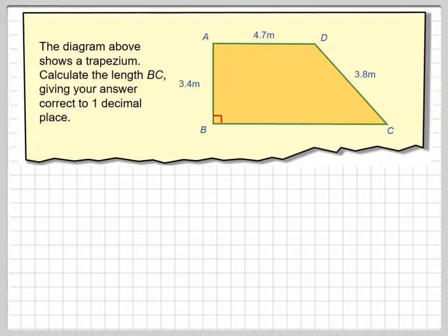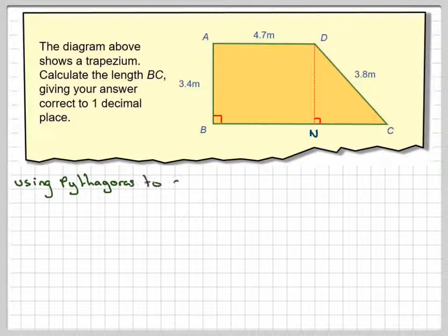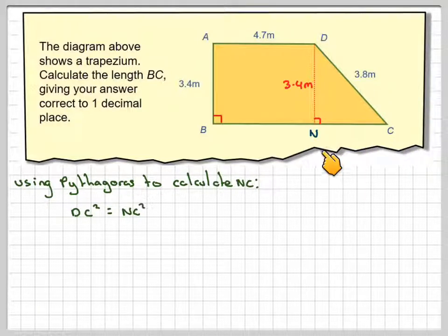In order to do that, what we need to do is draw in a line here which is a right angle, and we'll call that N. So we know that this bit here is 4.7, but what we need to do is find this length here. Using Pythagoras to calculate NC, we know that this length is 3.4 because this one is 3.4. Then we can say that DC squared is equal to NC squared plus ND squared.